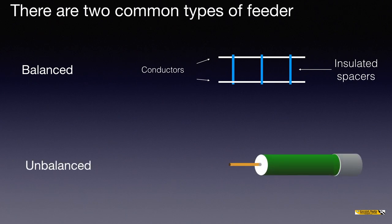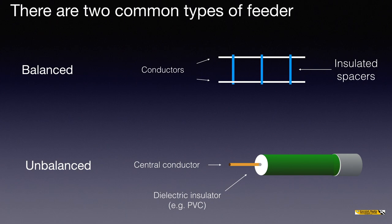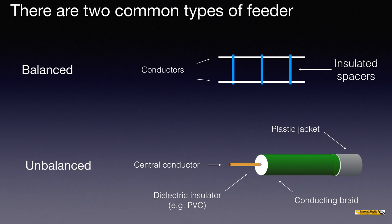The more common type of feeder is an unbalanced feeder. With coaxial cable, the central conductor runs up the middle, normally some copper. This is surrounded by a dielectric insulator — don't worry if you don't understand the word dielectric, that becomes plain in subsequent videos such as the intermediate and advanced course treatment of feeders. It is an insulator, and that is in turn surrounded by a conducting braid, normally a sort of copper mesh. Then finally, outside and protecting everything, is a plastic jacket.